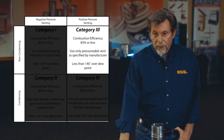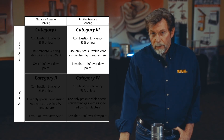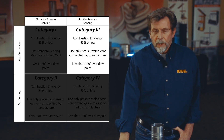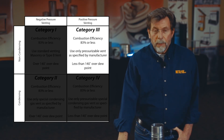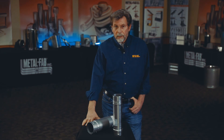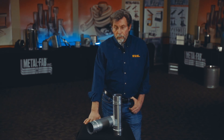Moving on to category three: category three appliances are positive pressure, so you have to have a sealed vent system so that the products of combustion don't leak out. Category three appliances are positive pressure and the temperature of the products of combustion are more than 140 degrees above dew point. We're not worried about condensation forming inside the vent, but we do have to be concerned about vent gases leaking out, so category three will require a sealed vent system as well.